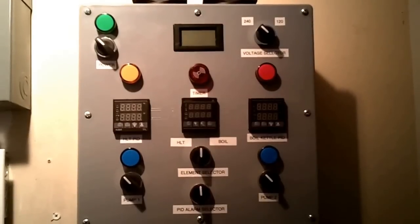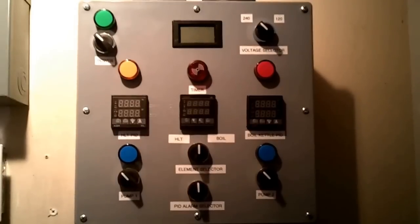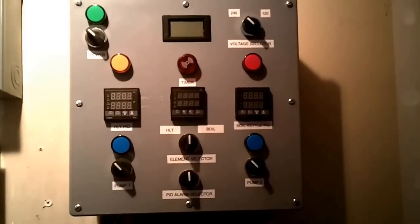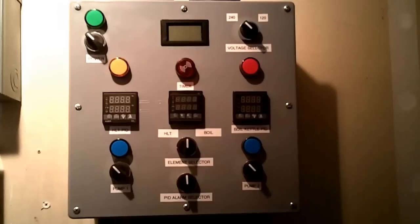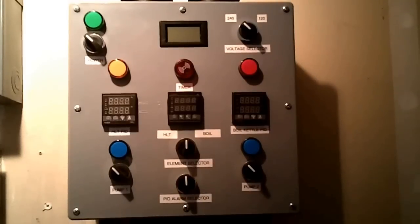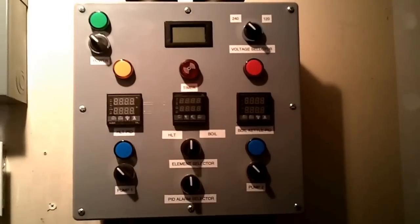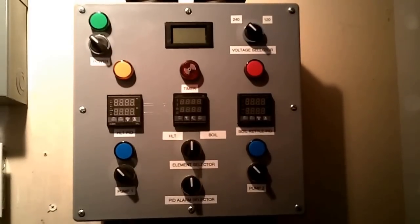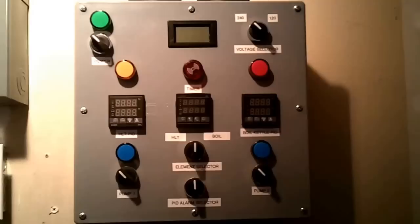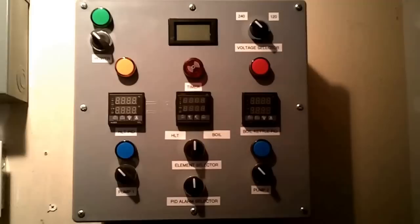And the reason being is that at 120 volt obviously less voltage but it doesn't mean that you're getting half the wattage to the element. You're actually getting more like 25% of the wattage to the element. So that 5500 watt element becomes closer to about 1300, 1350, something like that. So you can see why it would be a little bit easier to feather that temperature when you're just trying to maintain it over trying to ramp up temps quickly. So anyways it's just a nice feature that I felt was useful.